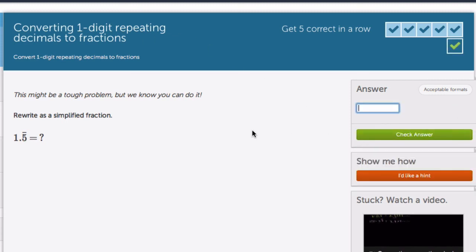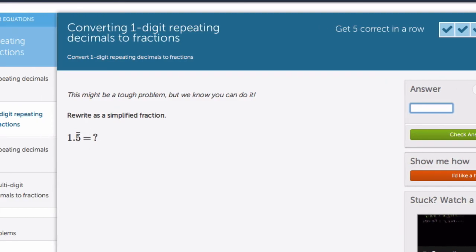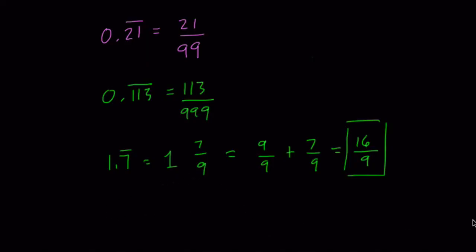Let's try one more together. 1.5 repeating, okay, well, that would just be what? Well, 1.5 repeating would equal 1 and 5 over 9, which equals 9 ninths plus 5 ninths, which is 14 over 9, which can't be reduced. So that's our final answer.